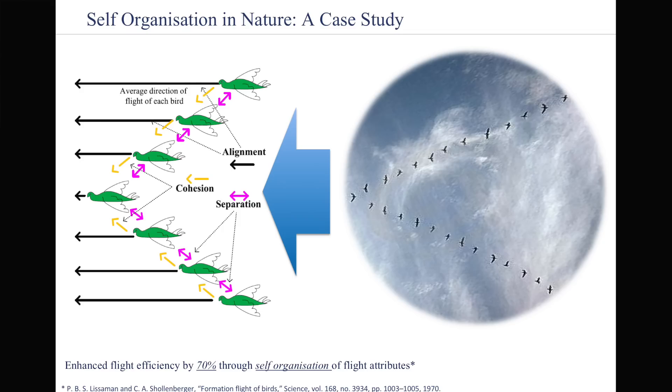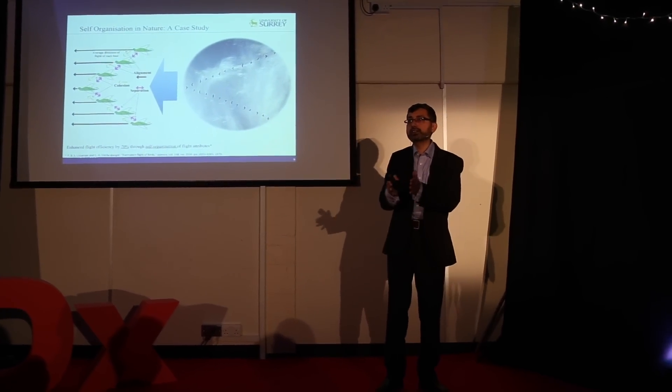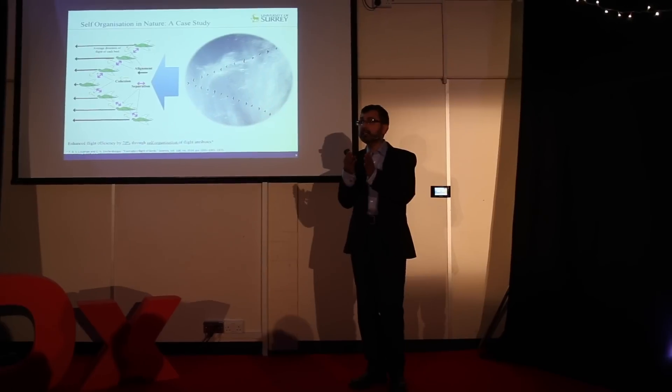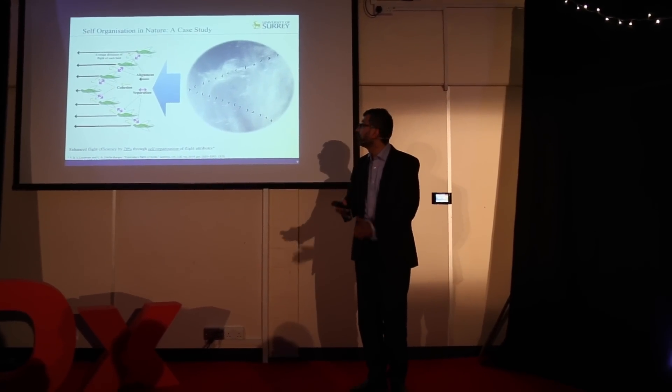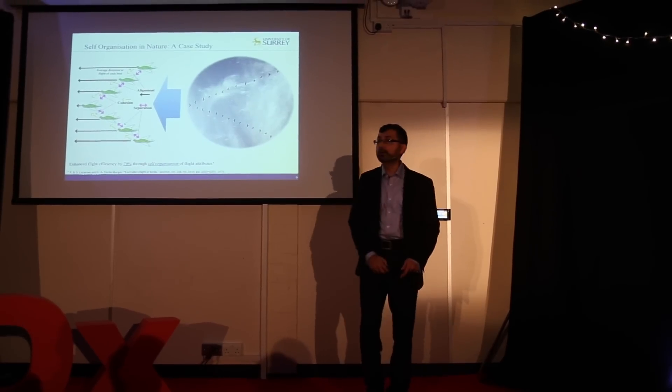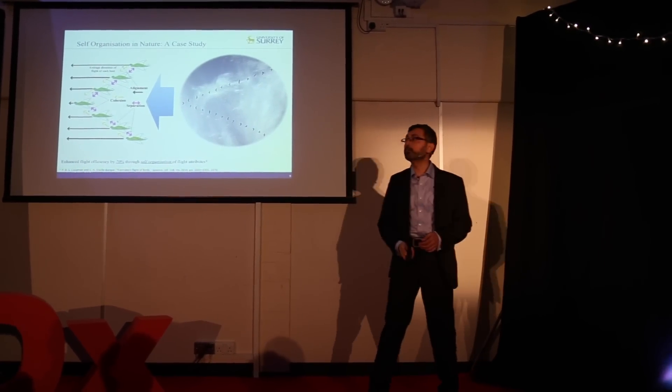One example is this flock of cranes, common cranes which fly very long distances. In order to optimize their flight, it has been shown that they form this V formation which can improve their flight efficiency by 70%. How do they do that? Do they have a common leader which tells them to do this? No. They do it in a distributed manner by taking some local actions in order to maintain cohesion, separation and alignment on an individual cranes basis. By doing these local operations, they can form this specific flight formation which can improve their flight efficiency.